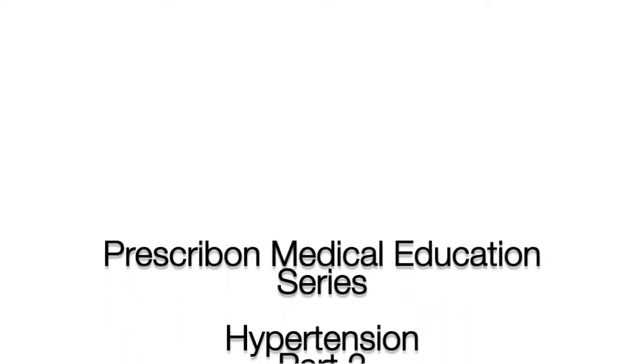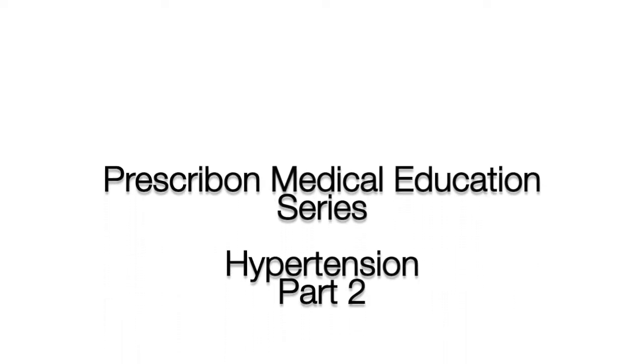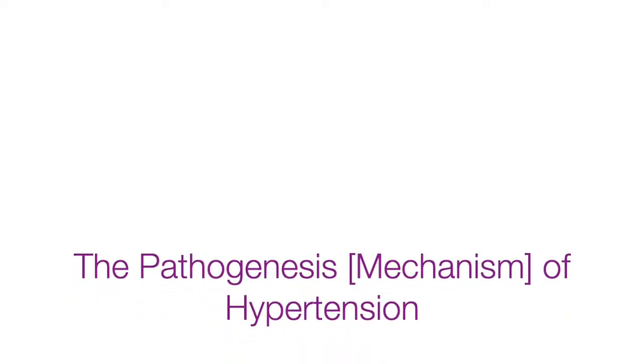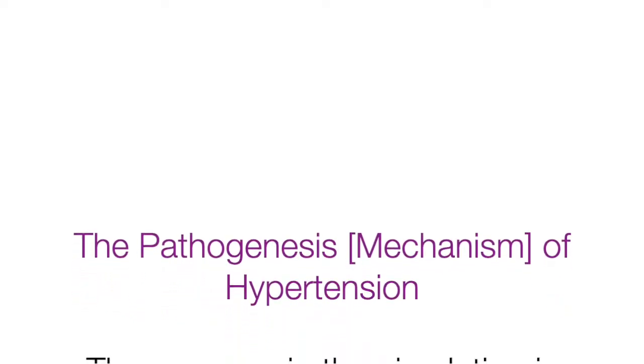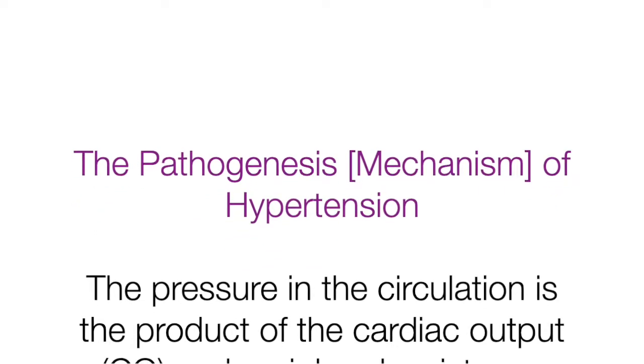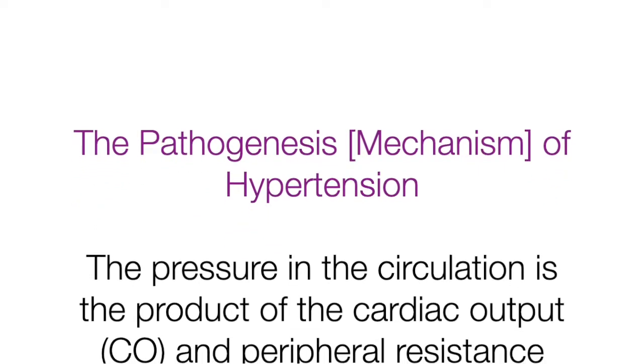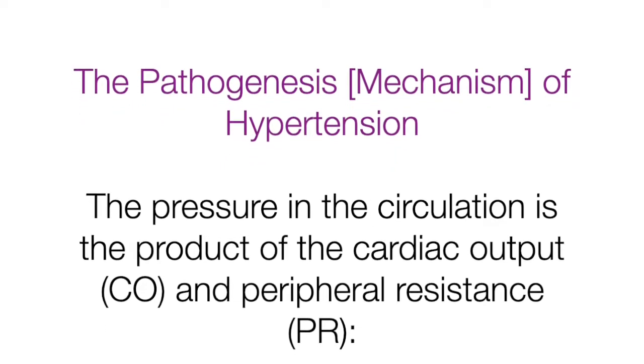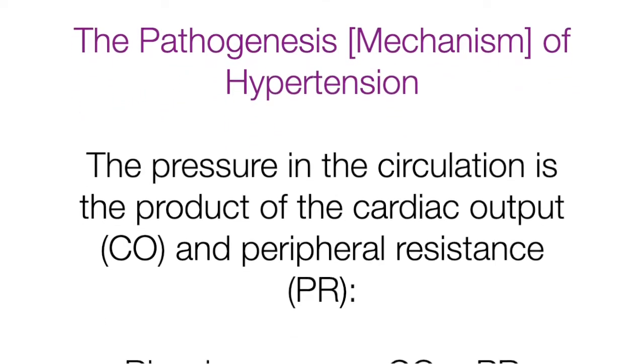PrescribeOn Medical Education Series: Hypertension Part 2 — The Pathogenesis, that is the Mechanism of Hypertension. The pressure in the circulation is the product of the cardiac output (CO) and peripheral resistance (PR). Blood pressure is equal to CO multiplied by PR.